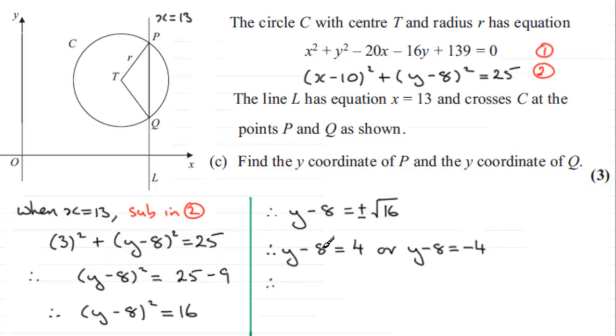So therefore, if we add 8 to both sides, we've got y equals 4 plus 8, which is 12. And if we add 8 to both sides in this equation, we've got y equals 8 minus 4, which is 4.